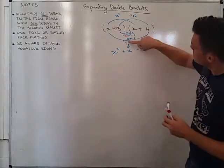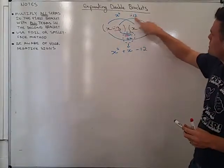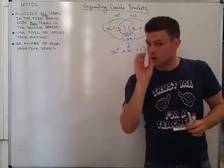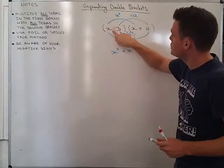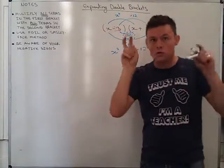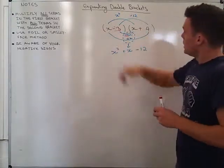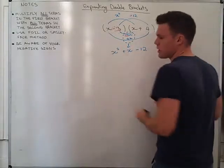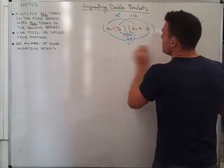Okay, so when you collect your like terms, please be aware of your negatives. When you're expanding them, please be aware of your negatives. You're not dealing with a 3, you're dealing with a negative 3. That operation in front of the 3 belongs to the 3, okay? And I'll do one more, make it slightly more challenging, and then I've got a few examples for you to do.